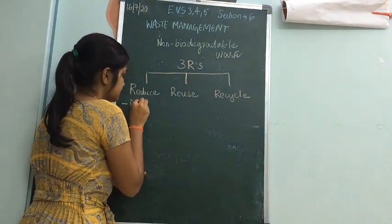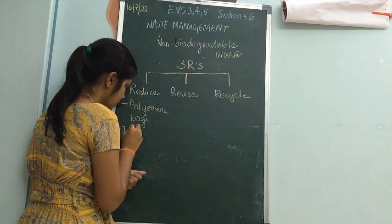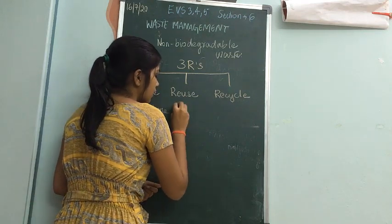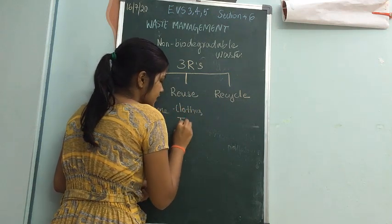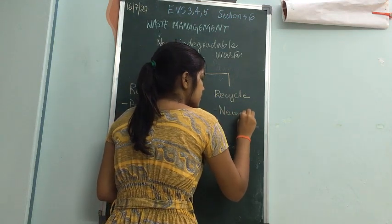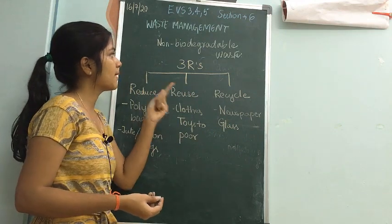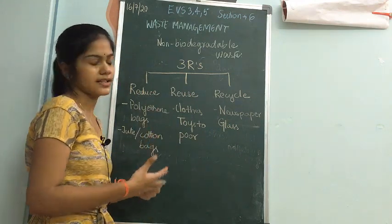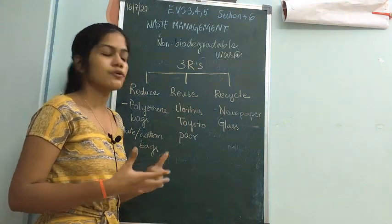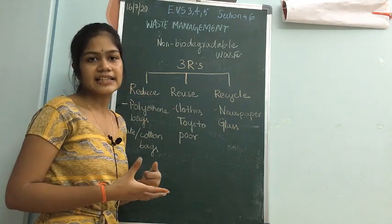To summarize the three R's: Reduce — you can reduce the use of polythene bags by using jute or cotton bags. Reuse — you can give old clothes and toys to the poor so they can use them. Recycle — old newspapers and glass can be recycled into new ones. In this way, you can reduce non-biodegradable waste.